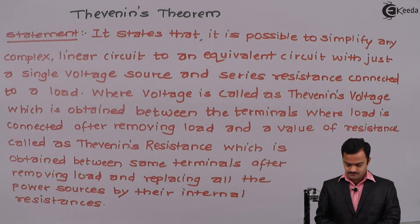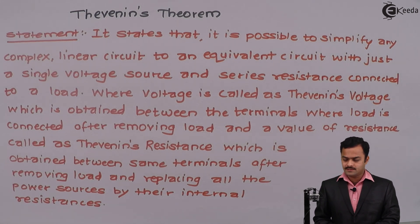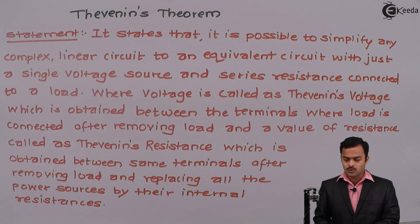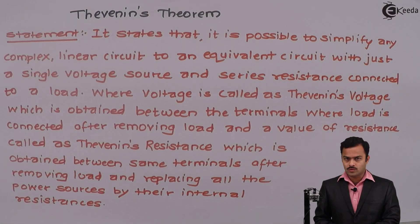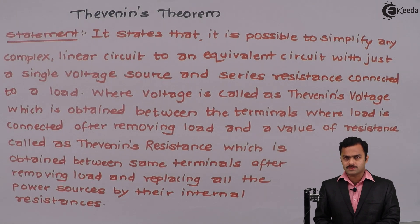Thevenin's theorem states that it is possible to simplify any complex linear circuit to an equivalent circuit with just a single voltage source and series resistance connected to a load. The voltage is called Thevenin's voltage, obtained between the terminals where the load is connected after removing the load. The resistance is called Thevenin's resistance, obtained between the same terminals after removing the load and replacing all power sources with their internal resistances.